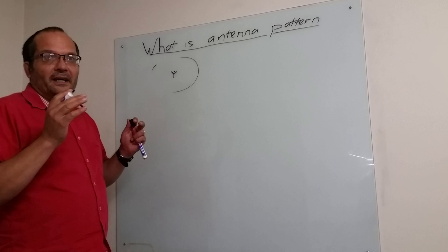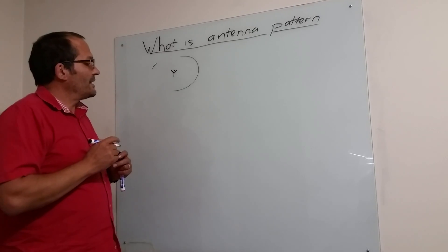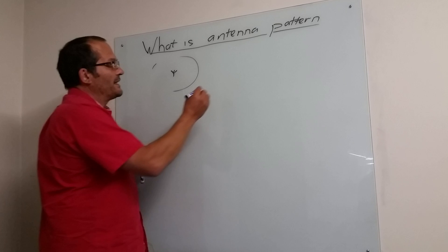What an antenna does always, is it radiates somewhat more in one direction than it does in another direction, and one draws this in the form of a pattern.